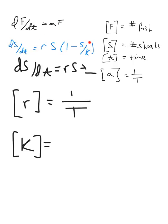Looking onto k, we can see that we take 1 minus s over k. So 1 and s over k need to have the same dimensions. Now 1 is a number here, and we consider it to be unitless. That means that s and k actually need to have the same dimensions. So the dimensions of s were the number of sharks, the dimensions of k are also going to be the number of sharks.